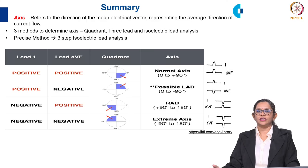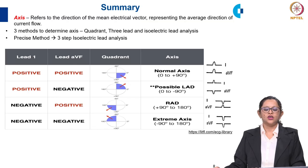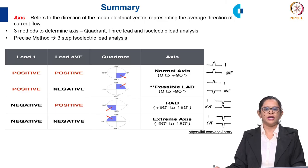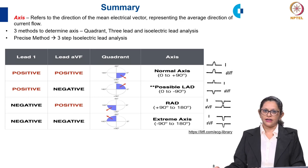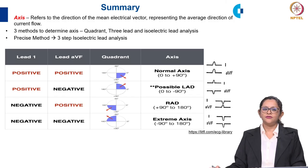To summarize: axis refers to the direction of the mean electrical vector, representing the average direction of current flow. Three methods of determining the axis are: quadrant method, three-lead analysis, and isoelectric lead analysis. The most precise method is the isoelectric lead analysis. You can memorize the table relating Lead I and Lead AVF QRS deflections to axis type: both positive is normal, Lead I negative and AVF positive is right axis deviation, Lead I positive and AVF negative is left axis deviation, and both negative is extreme right axis deviation.